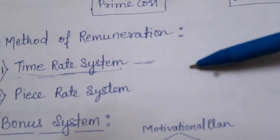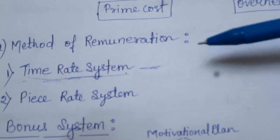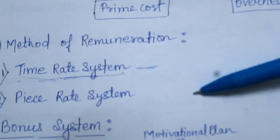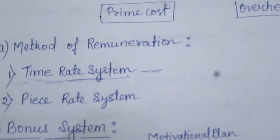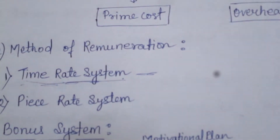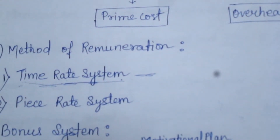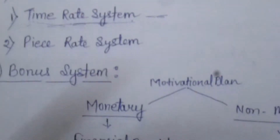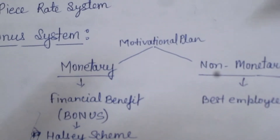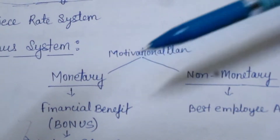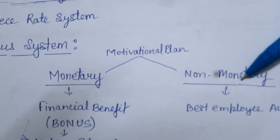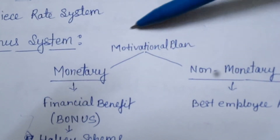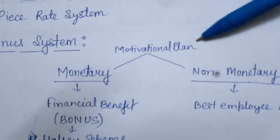अब यह तो हो गए दो हमारे Systems जिनमें हम Wages देते हैं. अब दूसरा part आता है कि Employees से बेहतर काम कराने के लिए उनको motivate कैसे करें? इसके लिए हम plans ला सकते हैं — monetary motivational plan and non-monetary motivational plan. यह plan इसलिए लाया गया ताकि हम Company के Employees को motivate कर सकें बेहतर काम करने के लिए.